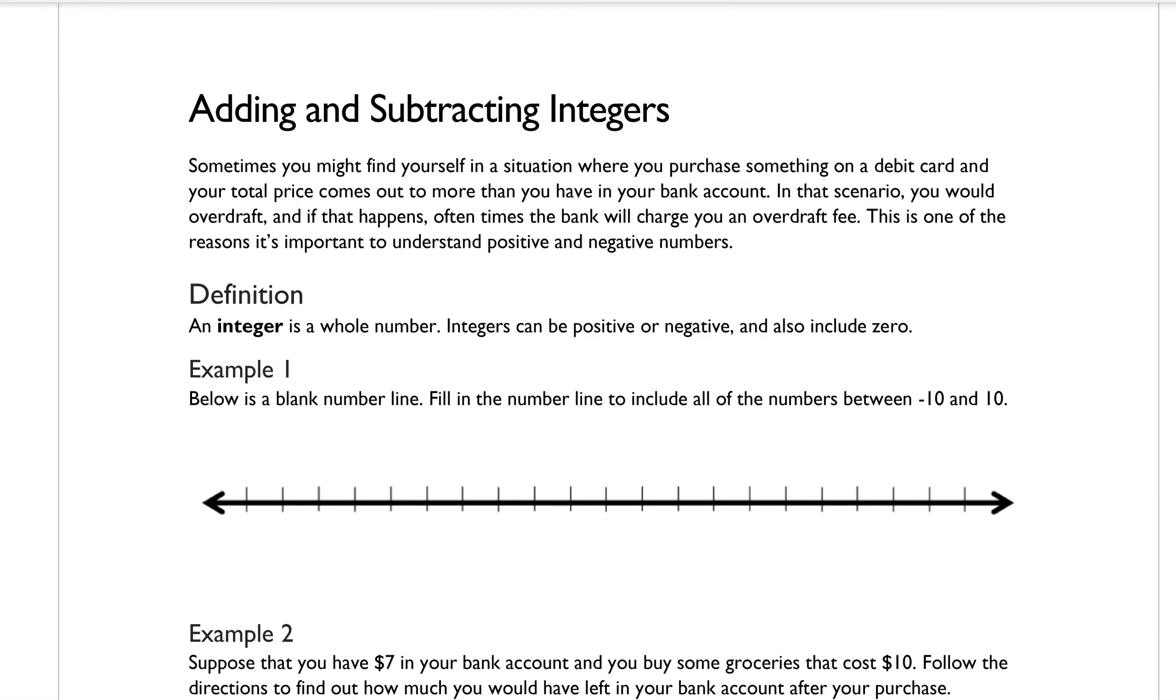Now, an integer is a whole number. Integers can be positive or negative and also include 0. Below is a blank number line. Fill in the number line to include all of the numbers between negative 10 and positive 10.